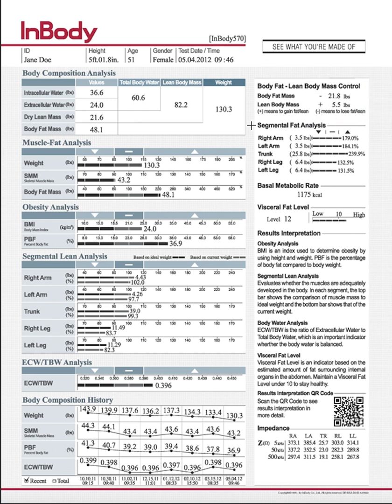We also have the fat analysis, which is the opposite of the lean analysis. This shows you how much body fat is in the different areas of your body — right arm, left arm, trunk, right leg, and left leg.